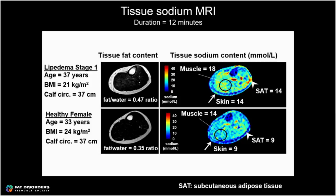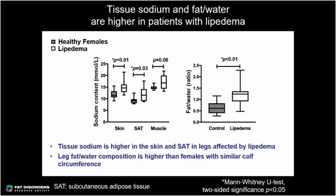Now showing the group-level results. The graph on the left shows sodium content from three tissue regions — skin, subcutaneous adipose tissue, and muscle — with gray boxes for females without lipedema and white boxes for females with lipedema. We measured a significant increase in sodium concentration in the skin and subcutaneous adipose tissue in legs affected by lipedema. The graph on the right shows the fat-to-water ratio, which was significantly elevated in patients with lipedema, in legs matched for calf circumference.